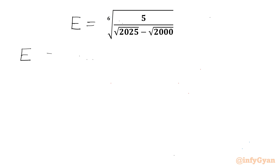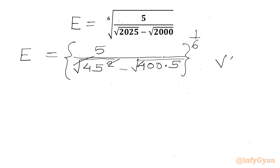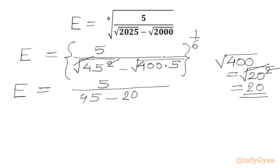We can write E equal to 5 over square root of 2025, which we know is the square of 45, minus square root of 2000. We can factor square root of 2000 as square root of 400 times 5. Then we write the whole thing to the power 1 over 6. Square root 400 is square root of 20 squared, so square root and square cancel, giving 20.